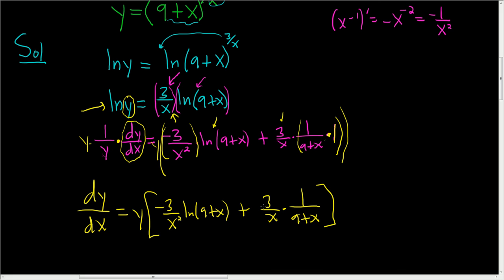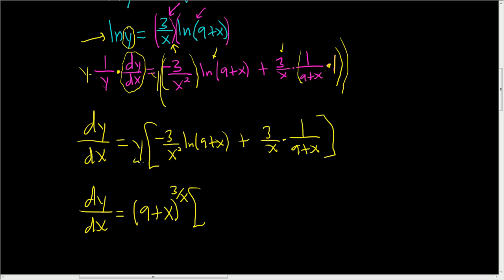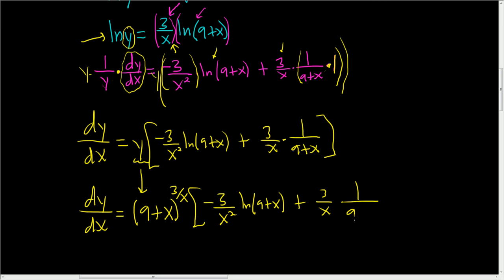And we're not done, right? y is equal to 9 plus x to the 3 over x. So dy/dx equals y, but y was 9 plus x to the 3 over x, so you have to plug that back in. The final answer is dy/dx equals 9 plus x to the 3 over x, times the bracket: negative 3 over x squared times natural log of 9 plus x, plus 3 over x times 1 over 9 plus x.